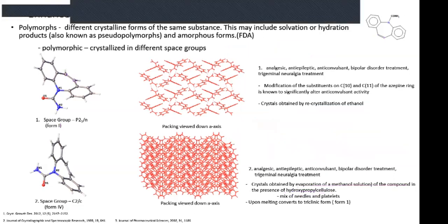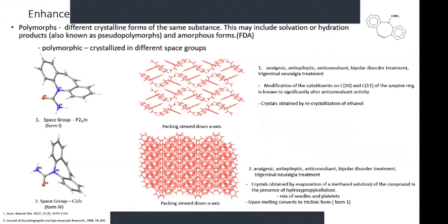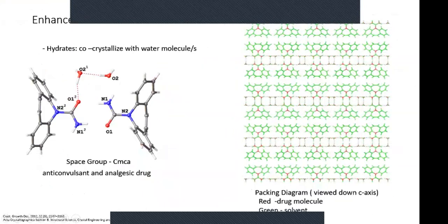Polymorphs are another way to enhance APIs, using different crystallization techniques to obtain different polymorphs. Another type of enhancement is forming a hydrate — where water molecules crystallize in the crystal lattice. If you grow crystals out of water, there's a high probability that water will co-crystallize in the crystal lattice, giving you a hydrate structure.